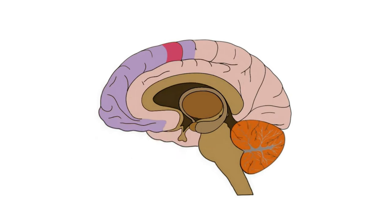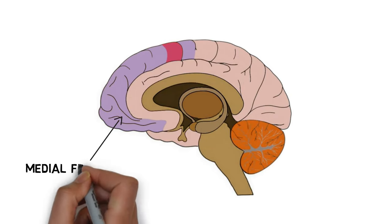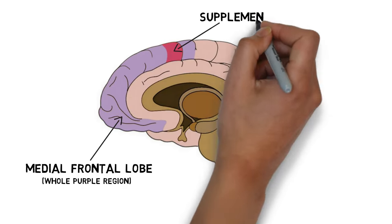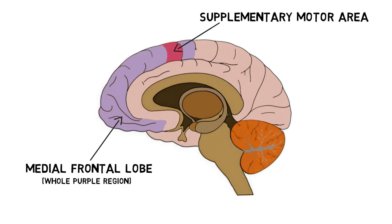The medial frontal lobe contains the supplementary motor area, which is thought to be involved in the initiation of movement as well as the inhibition of unwanted movements. Damage to this area thus may lead to an impaired ability to inhibit unwanted movements in the alien limb.